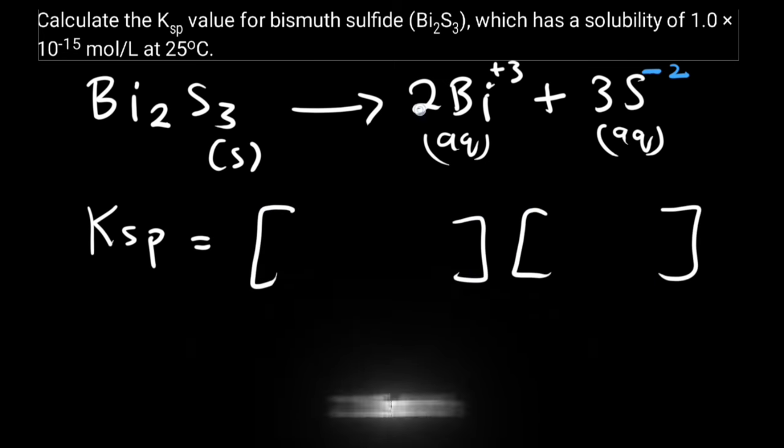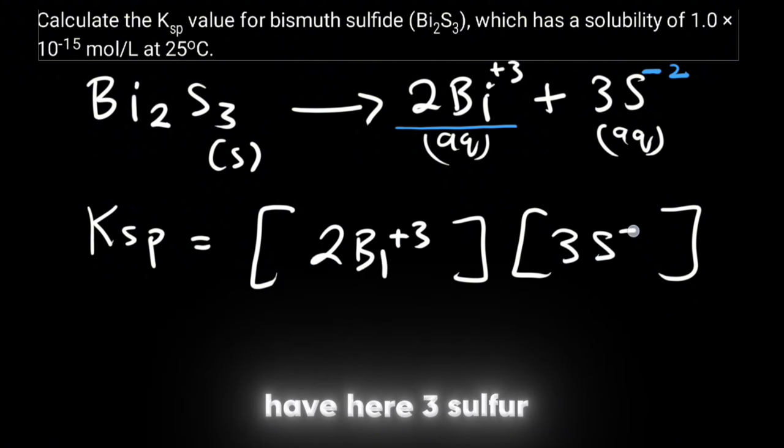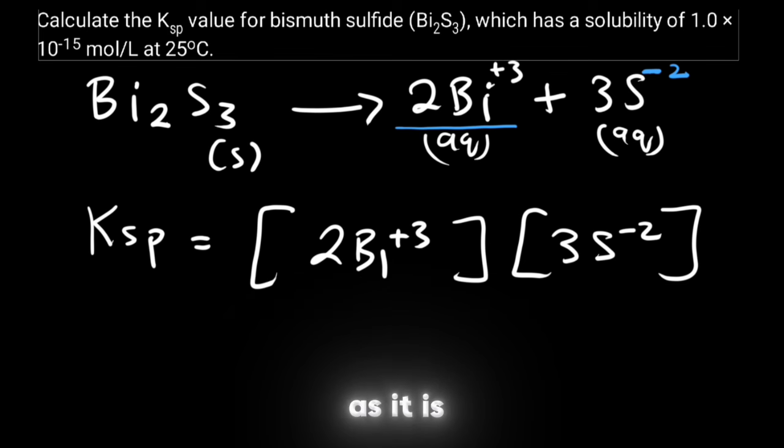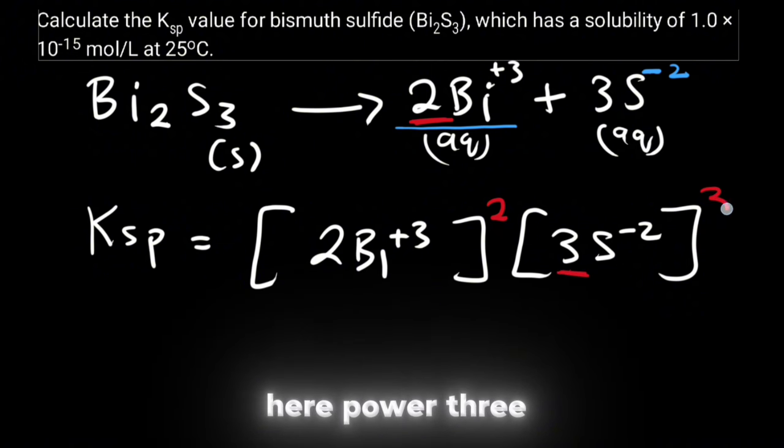We have here 2 bismuth. We write 2 Bi plus 3 and then we have here 3 sulfur. We write it as it is. But because we have here the coefficient 2 so we will put here power 2 and because we have here the coefficient 3 we will put here power 3.